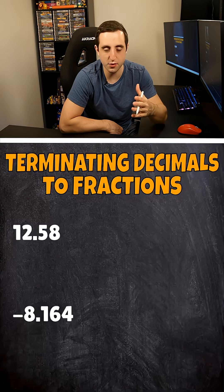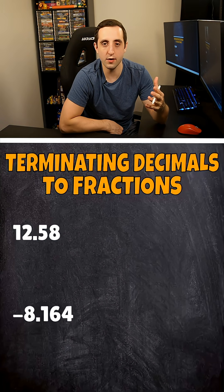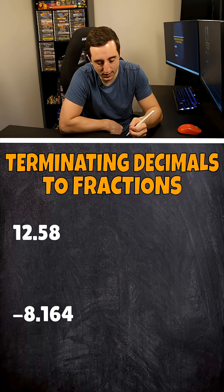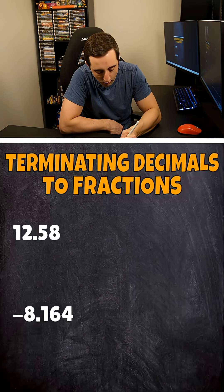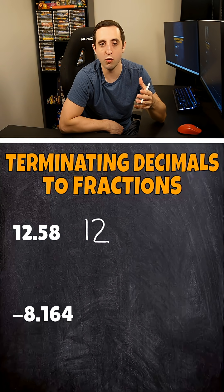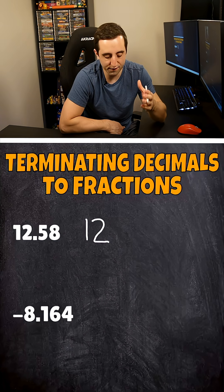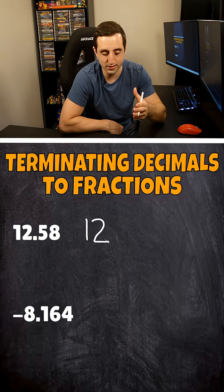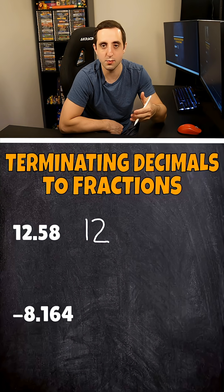So if we go ahead and take a look at the first one, we have 12 and 58 hundredths. The number that's in front of the decimal point is just going to be the number that stays out front in our mixed number when we're converting this. But then you have to be very careful with knowing your place values. The first number that's behind the decimal point is your tenths place. So the five is currently in the tenths place.